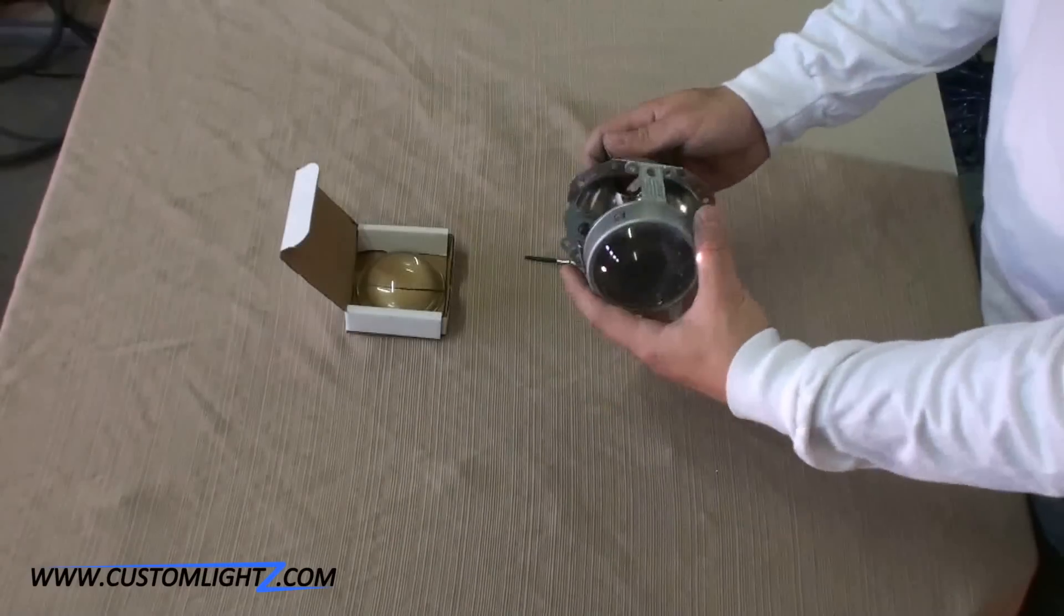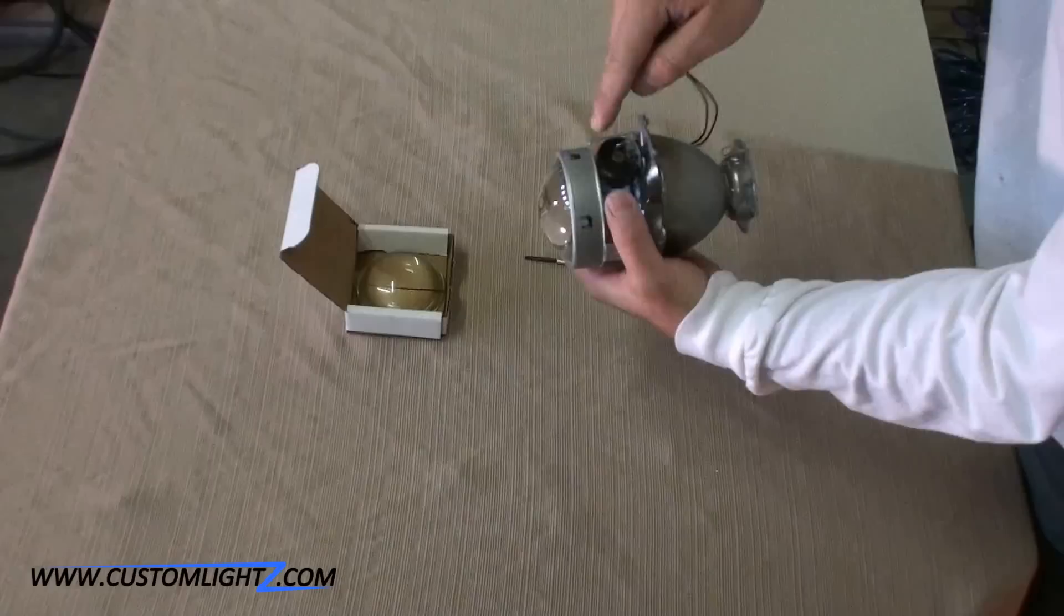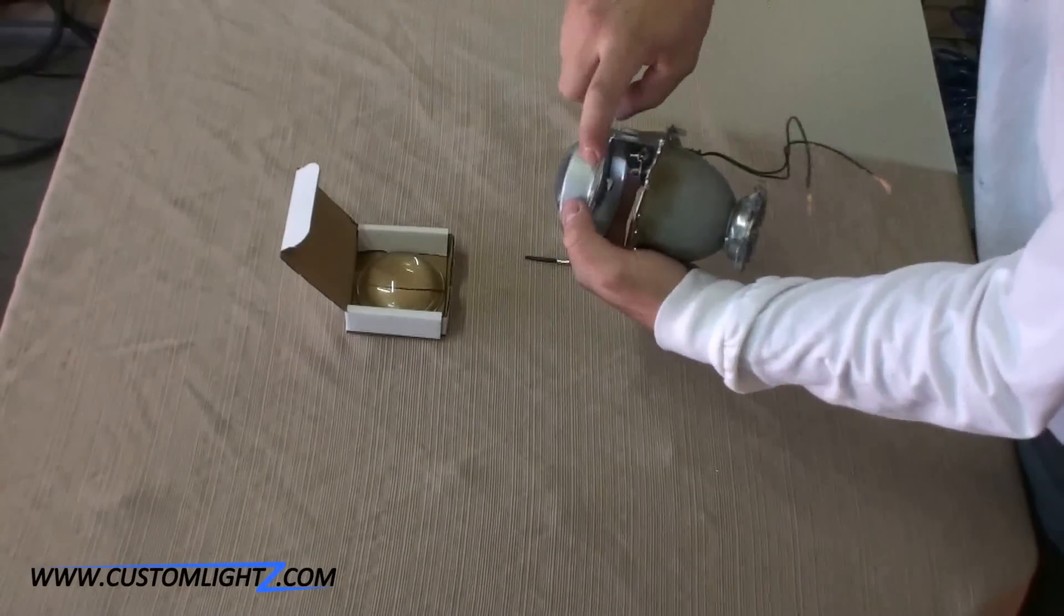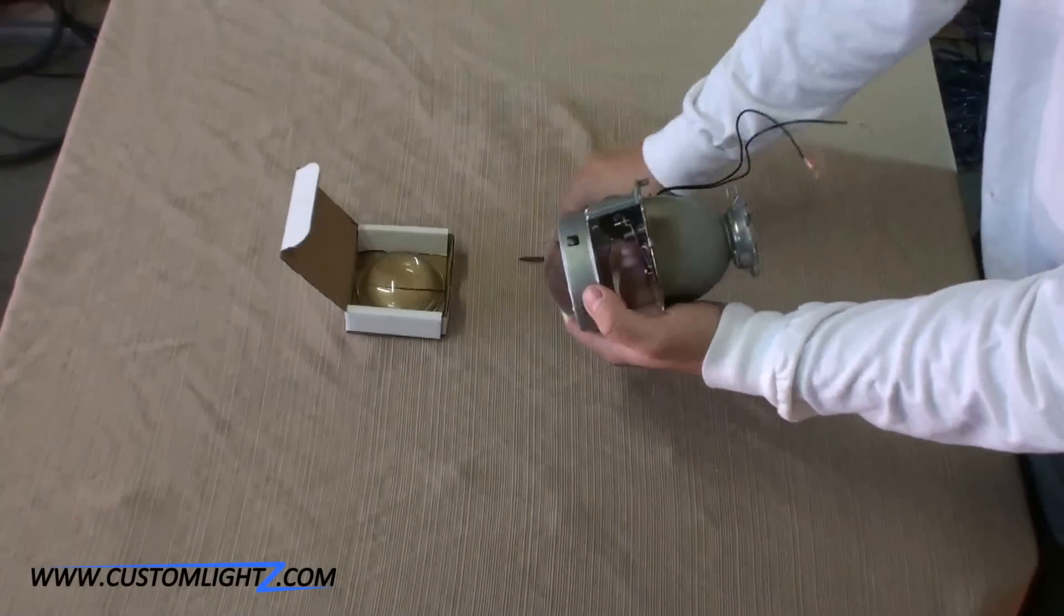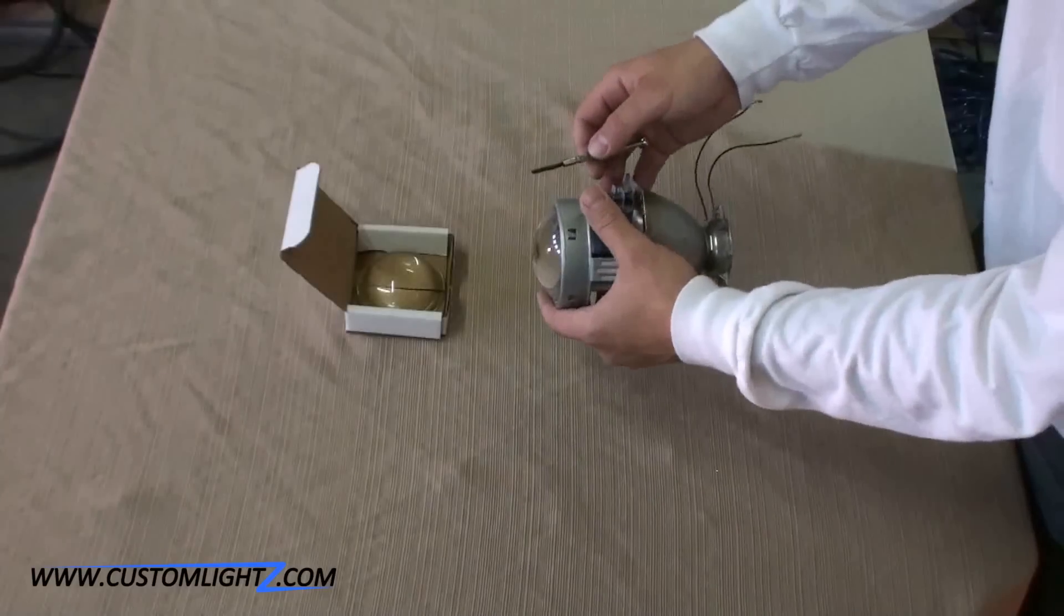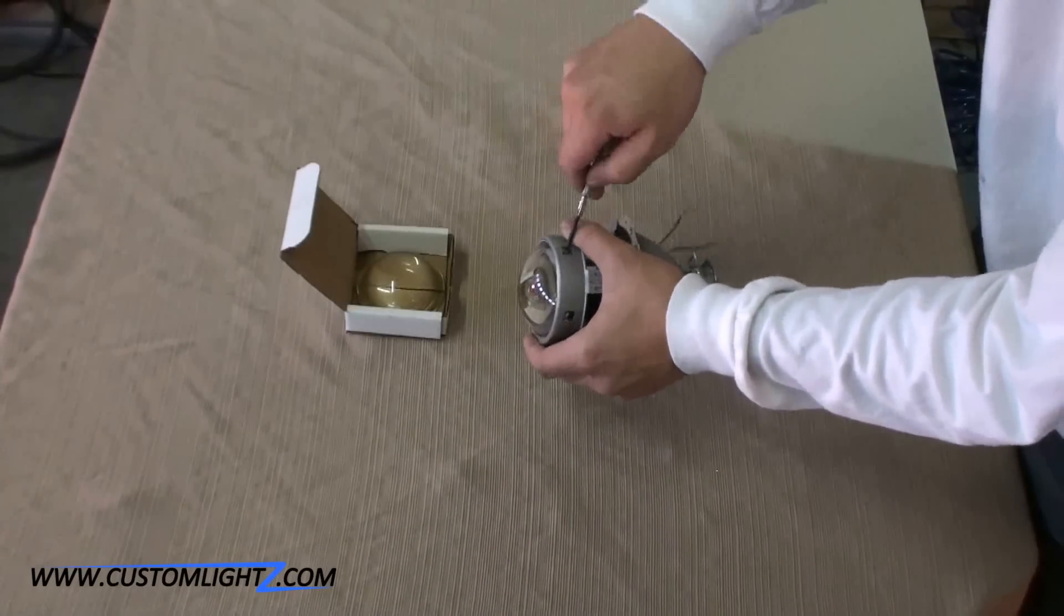So the first part is to take the lens out and to do so you need to lift these tabs that are actually holding a retainer ring that is pushing the lens forward. So we need to loosen that up. Ideally a smaller flat head screwdriver will be very helpful here.